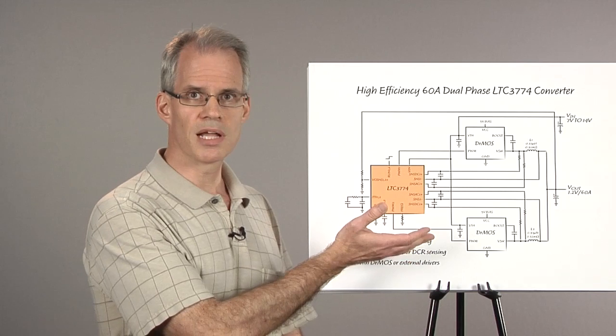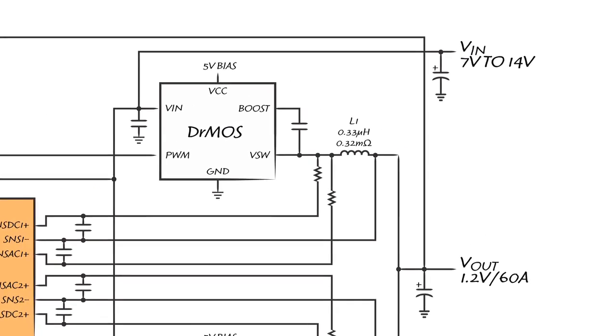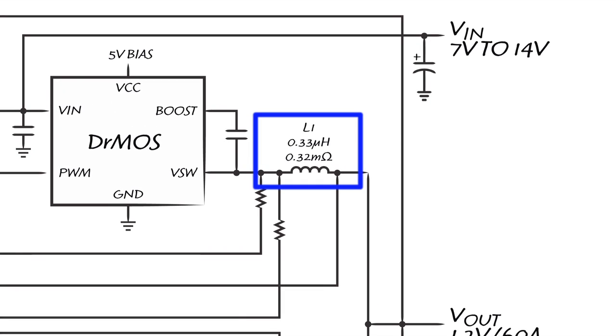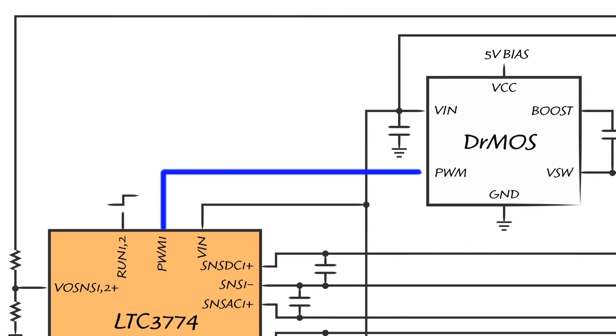Here is an application circuit for a high-efficiency 1.2-volt 60-amp dual-phase converter. The inductor used is a 0.33 microhenry ferrite chosen for its low core losses and low DCR value of 0.32 milliohms.